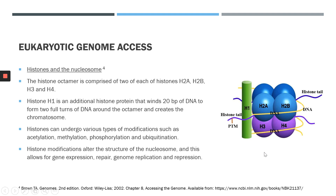Histones within the nucleosome can undergo various types of modifications. Some of these modifications include acetylation — the addition of an acetyl group — methylation, phosphorylation, as well as ubiquitination. In order for the cell to gain access to the DNA wound around histones, nucleosomes can be modified to allow for expression of certain genes, DNA repair, replication of the genome, as well as repression of certain DNA sequences.